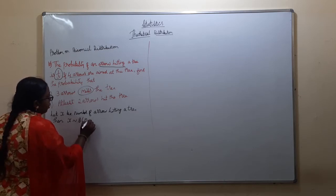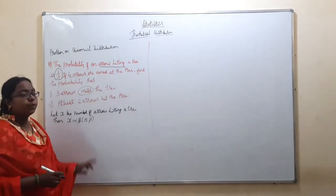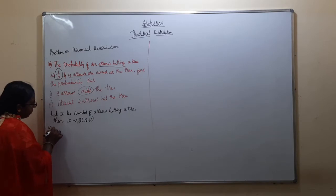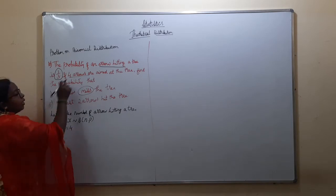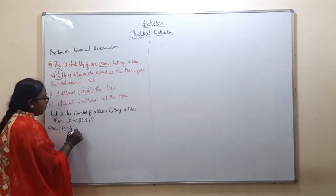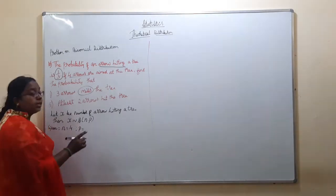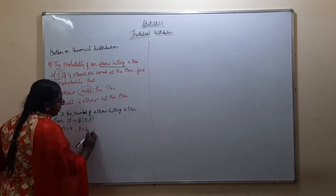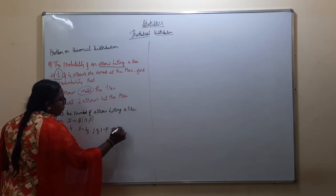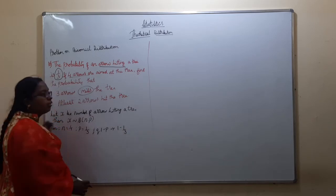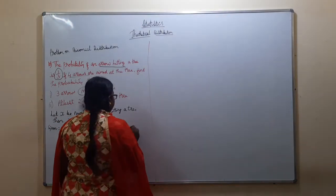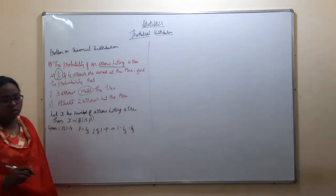x follows binomial distribution. Given: n = 4 (number of arrows), probability p = 1 by 3. Then q = 1 minus p = 1 minus 1 by 3 = 2 by 3. So q is 2 by 3.